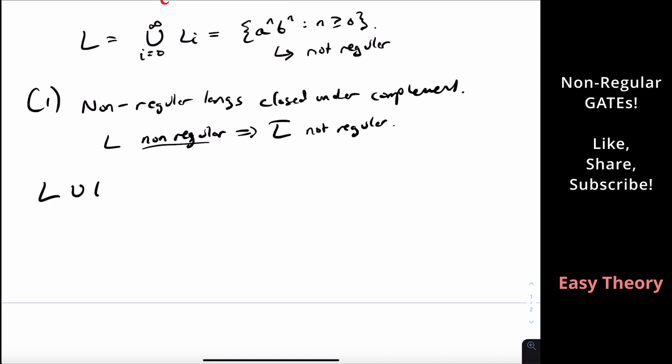L union its complement is always sigma star. So if we take L to be any non-regular language, any one that you want, like A to the N, B to the N, like we just did before, its complement is also non-regular.